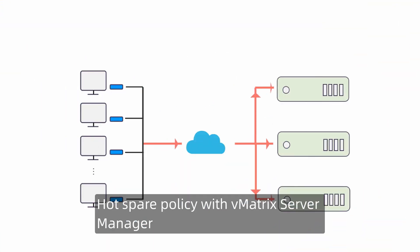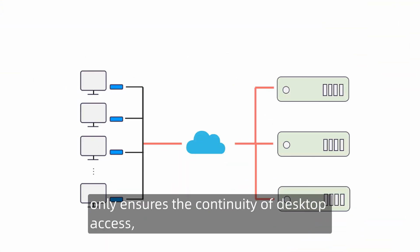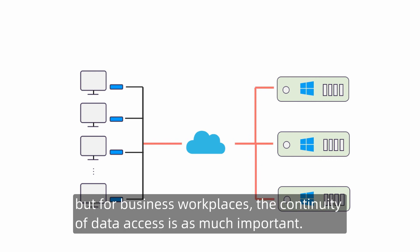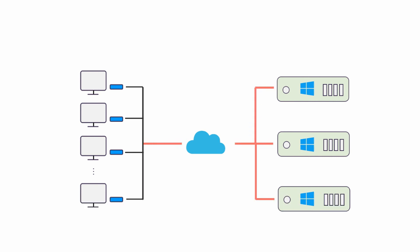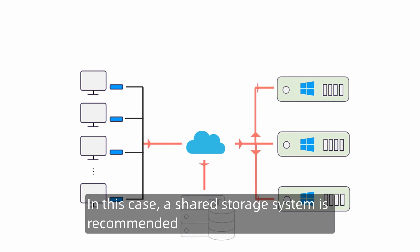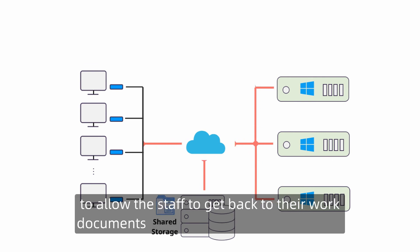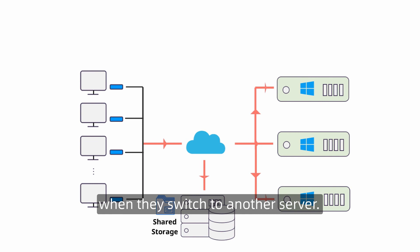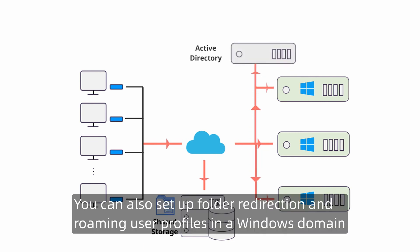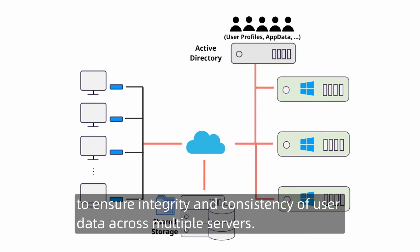The hotspare policy with Vmatrix Server Manager only ensures the continuity of desktop access, but for a business workplace, the continuity of data access is equally important. In this case, a shared storage system is recommended to allow staff to get back to their work documents when they switch to another server. You can also set up folder redirection and roaming user profiles in a Windows domain to ensure integrity and consistency of user data across multiple servers.